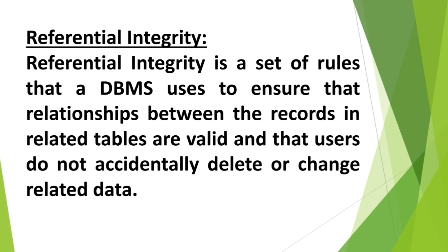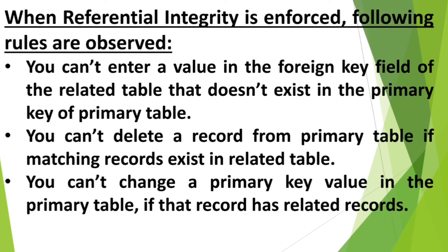These Referential Integrity rules are followed when the primary table has a primary key and this primary key is related with other tables. When Referential Integrity rules are enforced, the following rules are observed. First: you cannot enter a value in a foreign key field of the related table that does not exist in the primary key of the primary table. For example, for allotting a book to a student, we cannot allot a book to a student whose admission number is not mentioned in the student details table. There must be one student whose admission number matches the one we are entering in the book details table.